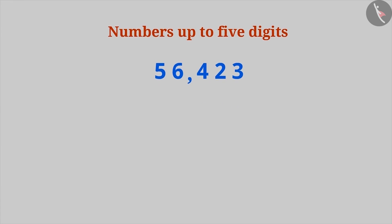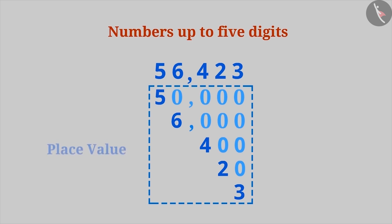Now look at this number. This number is made up of digits 5, 6, 4, 2 and 3. But the value of each digit is different. In this way, the numerical value of a digit dependent on the position of a number is called place value.